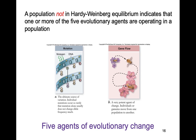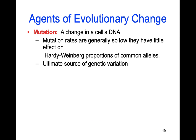A population not in Hardy-Weinberg equilibrium — which is pretty much every population in the world — is one where one or more of five evolutionary agents are operating. If there is no mutation, a population would be in Hardy-Weinberg equilibrium. But there are mutations all the time. You have mutations in your body right now and don't even know it. Most mutations don't turn you into a zombie or make you grow green hair — most of them we don't even notice.